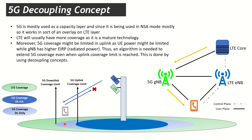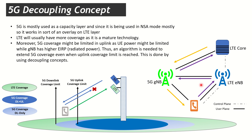We can leverage the NSA architecture to our advantage: keep the downlink on 5G but shift the uplink to LTE. With this approach, downlink data comes to the 5G gNodeB and goes to the UE over the 5G air interface. In uplink, the UE sends data to the LTE eNodeB instead, which forwards it over the X2 interface to the 5G gNodeB, and the gNodeB sends it to the core.